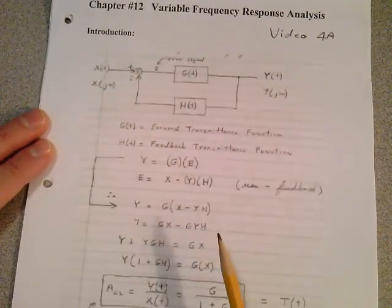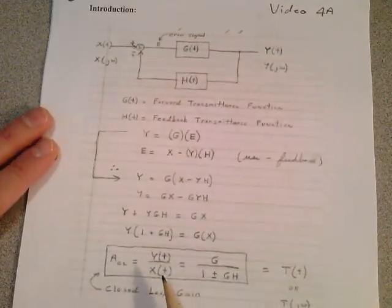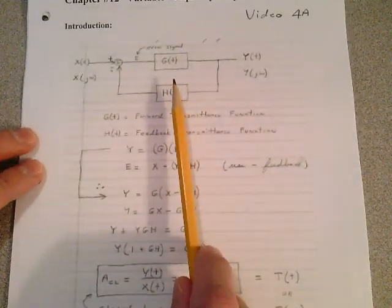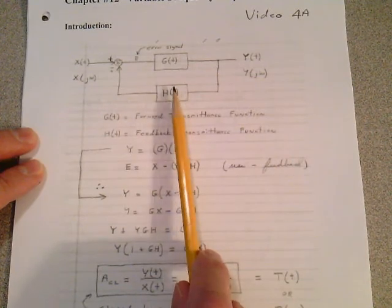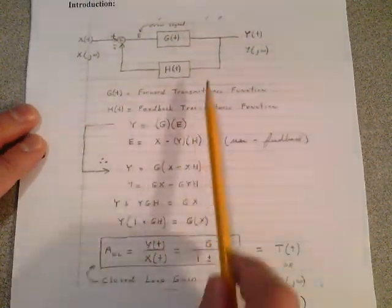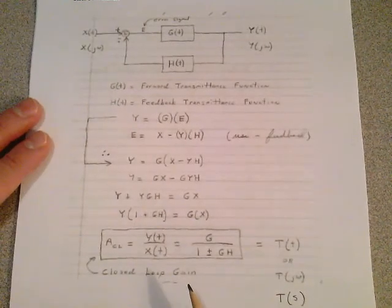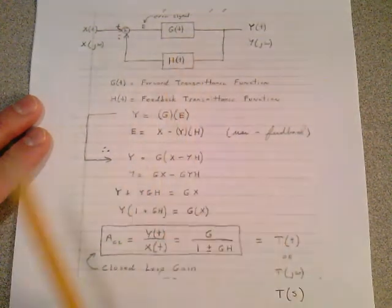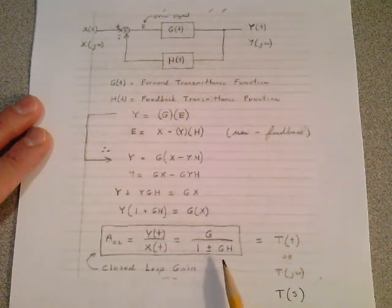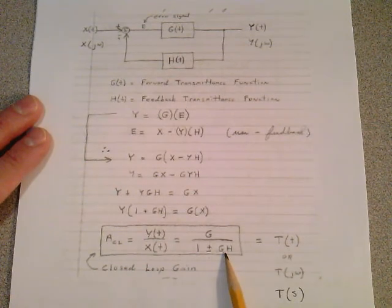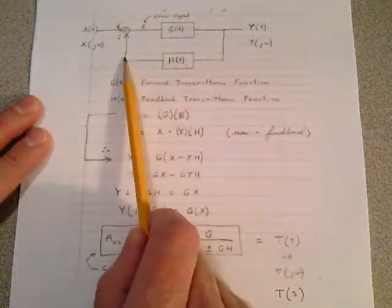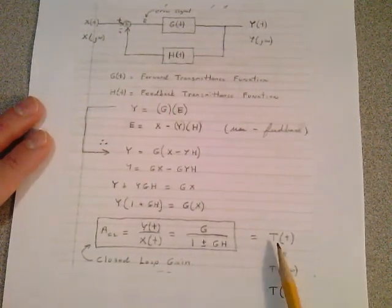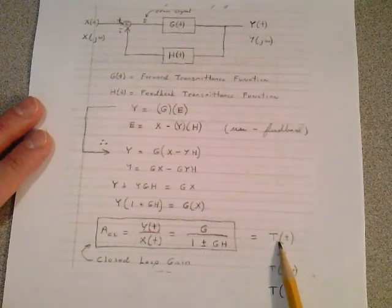As an introduction, we talked about this closed-loop gain equation. We said that the closed-loop gain of this block diagram, if you had negative feedback, we defined it as the output over the input, which was the forward-loop gain — whatever g of t was — divided by 1 minus the loop gain, which was the gain of this loop. That block times that block is the loop gain, and we defined it as something called T of s, some transfer function with respect to time.